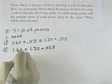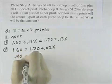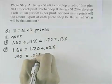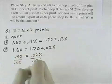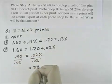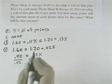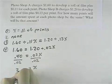Subtracting $1.20 from both sides leaves 40 cents on the left, and it leaves 2 cents times X on the right. And if I divide both sides by 0.02, I'll see that the number of prints for this problem should be 20.